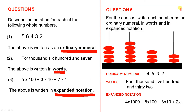Let's look at question 6 about the abacus. For the abacus, write each number as an ordinary numeral, in words, and in expanded notation. We'll take that as the ones column, the tens column, the hundreds column, and the thousands column.